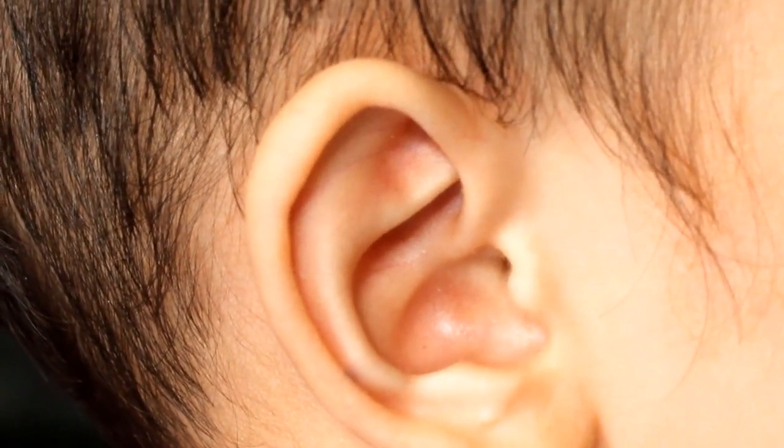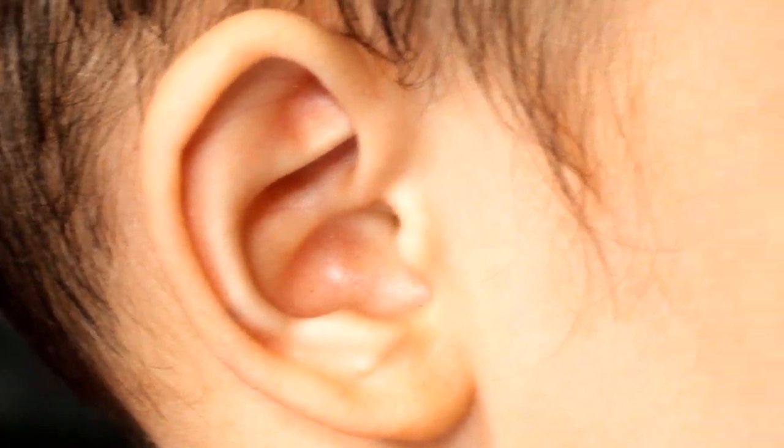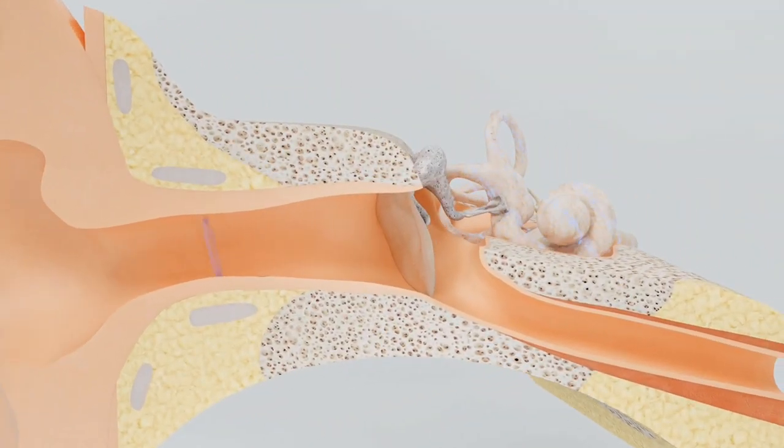The human ear works through a complex process that involves the outer ear, middle ear, inner ear, and auditory nerve.